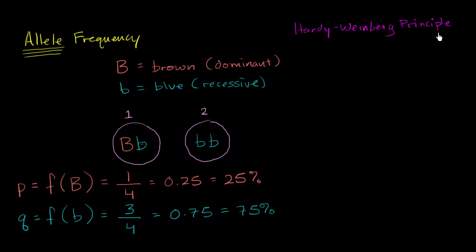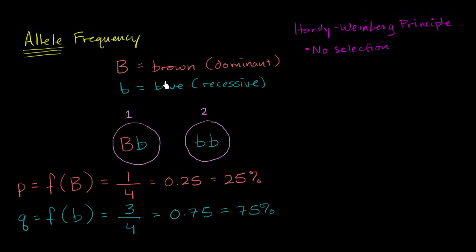Now before we go into that, we're going to make some assumptions, and these are all just assumptions that get us a stable allele frequency in the population from generation to generation. We're going to assume that there's no selection — no natural selection or even unnatural selection — going on that would change the allele frequency. So it's not like people with one of the alleles or another are going to be more or less likely to reproduce and have viable offspring.